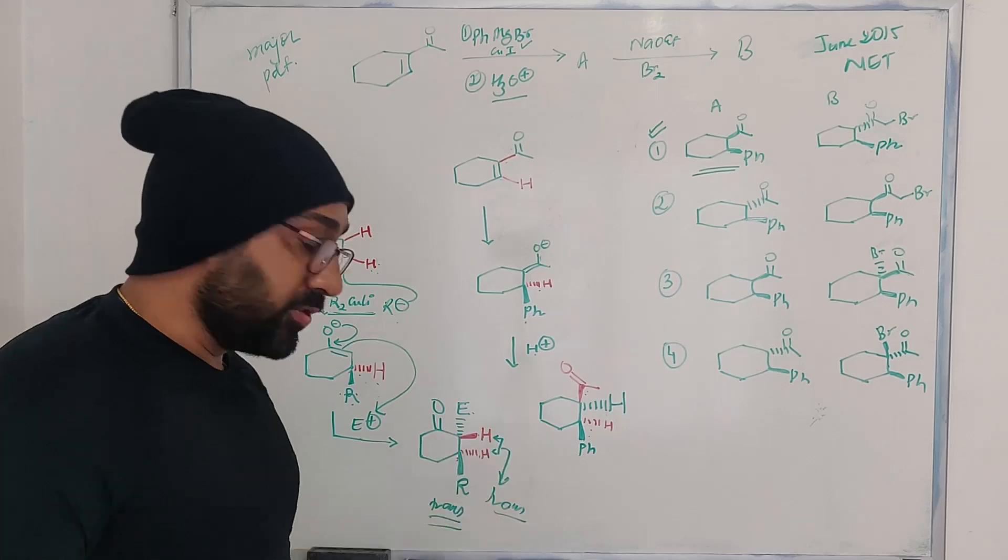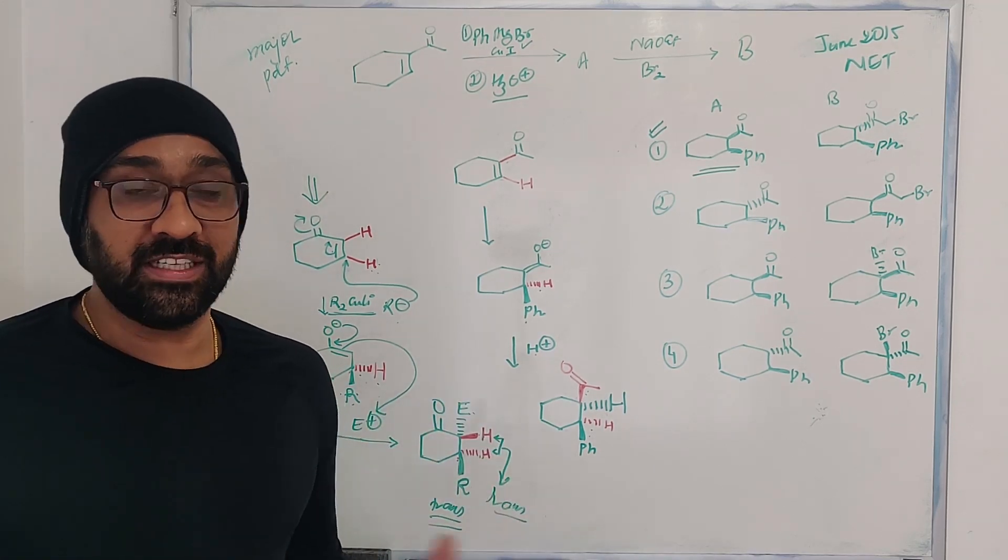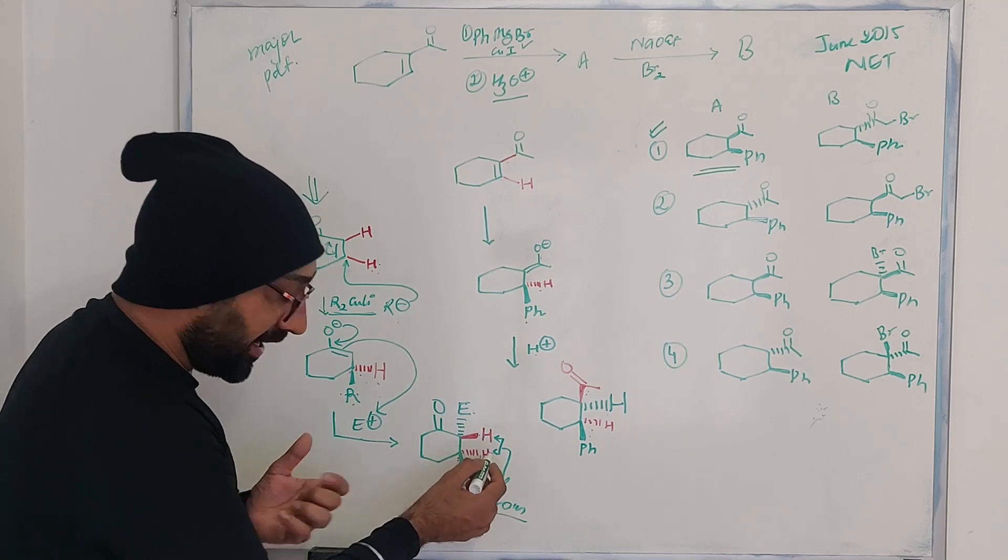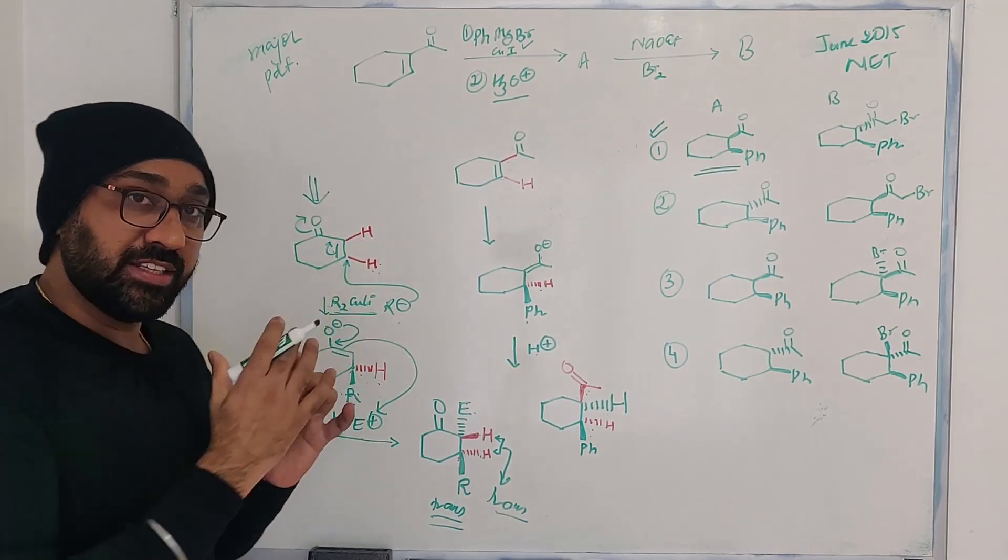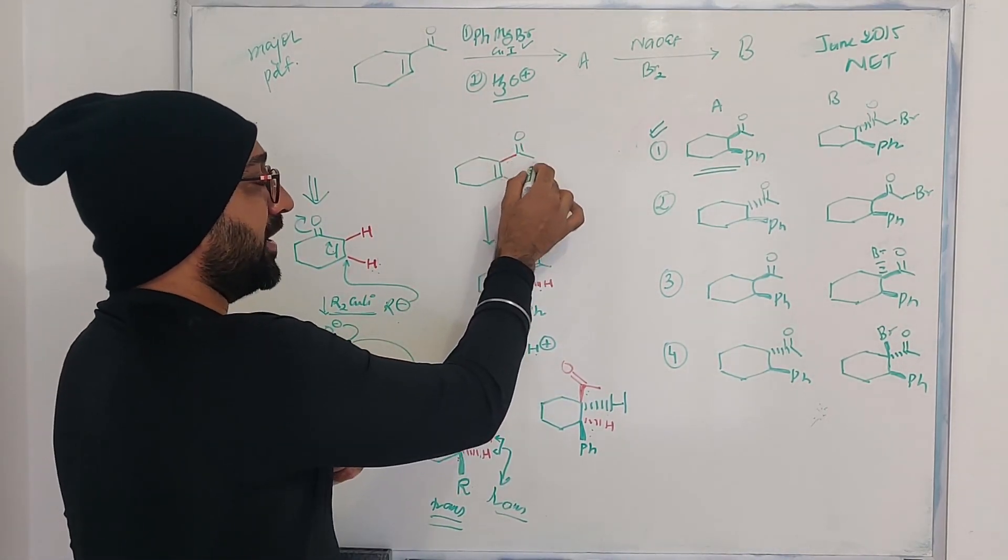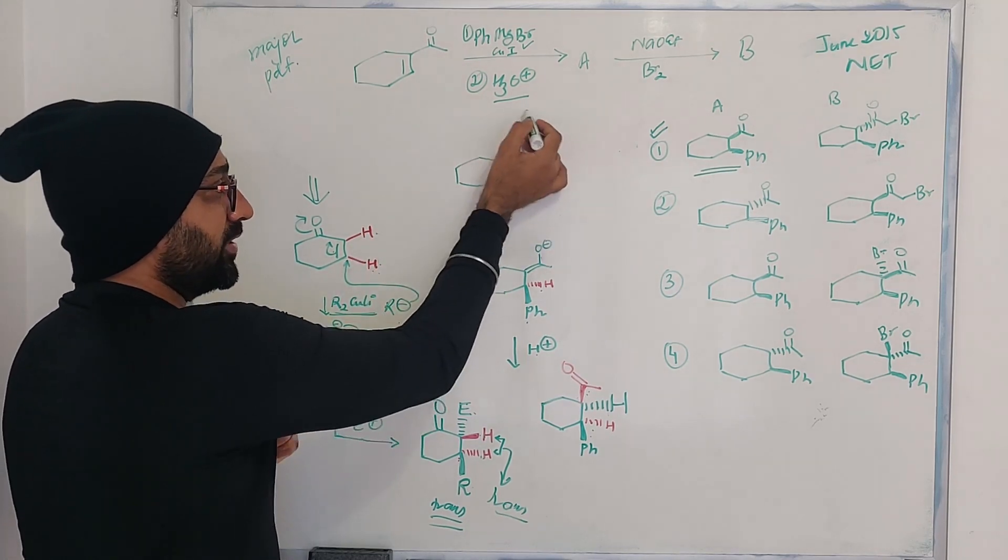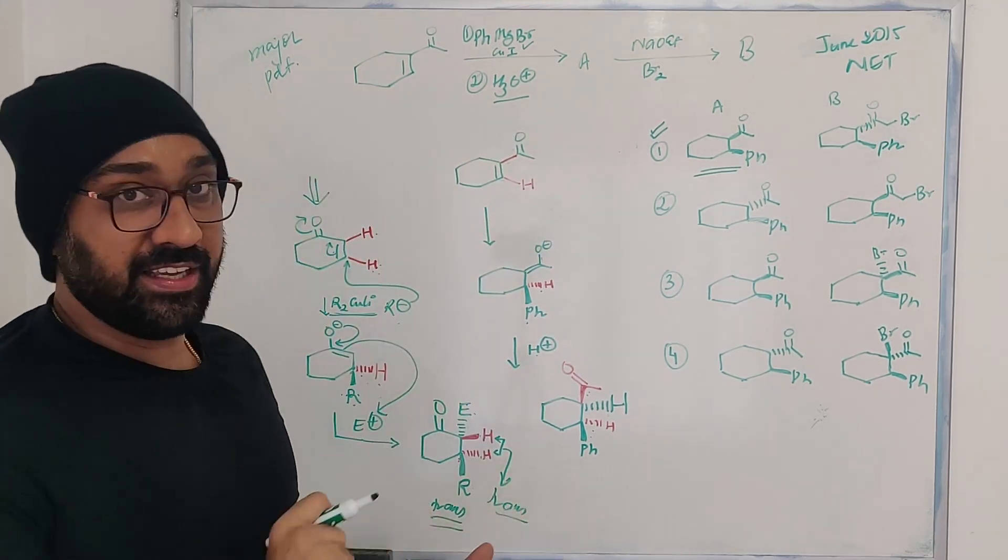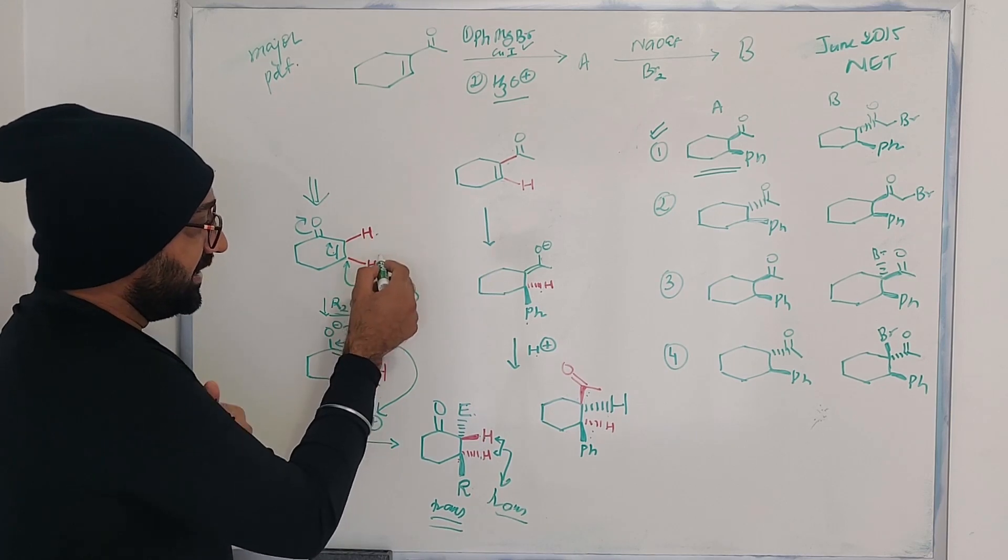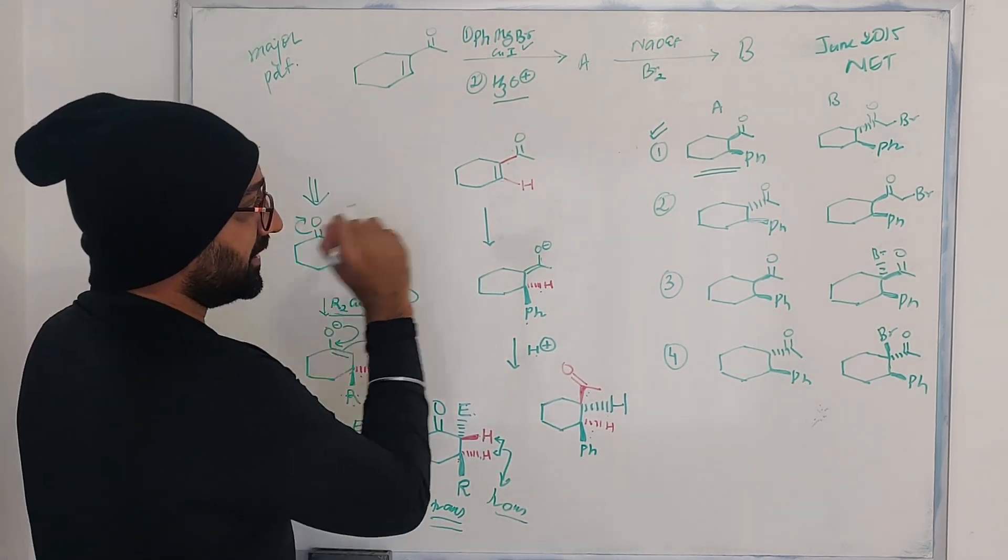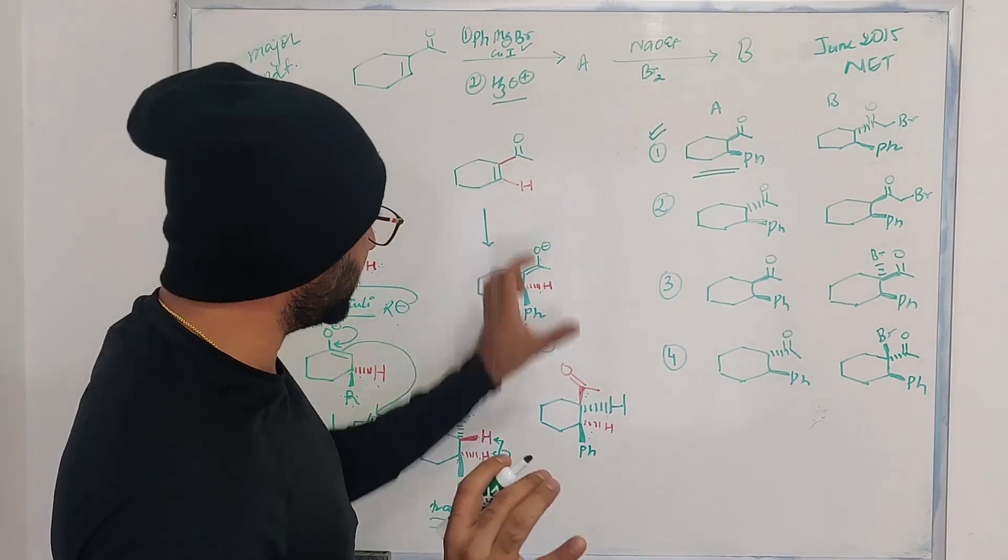As a result of which, in this particular reaction we can clearly see these two substituents are trans. But what is important to know? These two particular hydrogens - they are also trans to each other. If these two substituents are trans, then the hydrogens will be trans. Let us suppose if I replace one of the hydrogens with a substituent, let's say a methyl group, they will have the same stereochemistry.